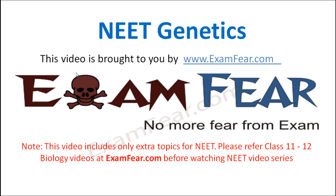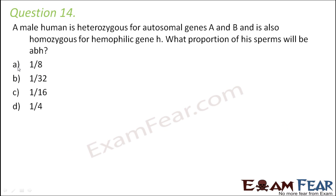Hello friends. This video on neat genetics is brought to you by examfear.com. Question number 14: A male human is heterozygous for autosomal genes A and B and is also homozygous for hemophilic gene H. What proportion of his sperms will be ABH?